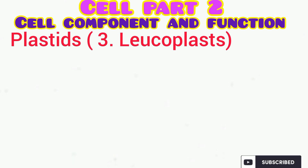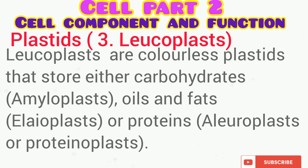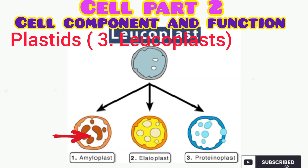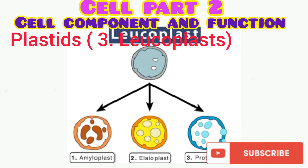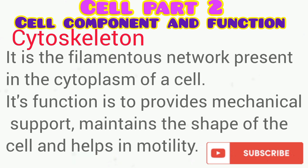The third kind of plastid is the leucoplast, which are colorless plastids that store either carbohydrates — known as amyloplasts — fat and oil — known as elaioplasts — or protein, known as proteinoplasts or aleuroplasts.